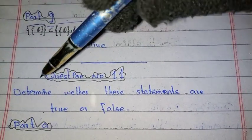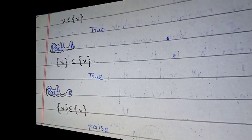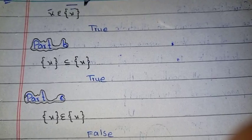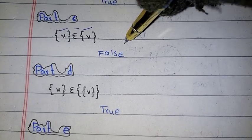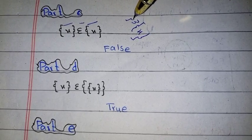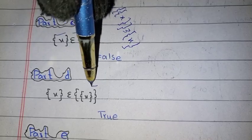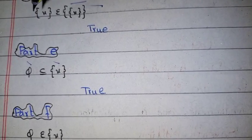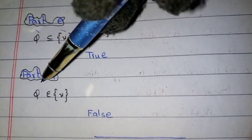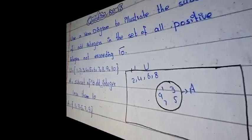Question number 11: determine whether these statements are true or false. That is true because this element is a proper subset of this set. Part D: this element is the first set of this set, so that is true. Part D: X is an element of this set, so that is true. Part F: the empty set is a subset of every set, but it is not an element of every set, so that is a false statement.